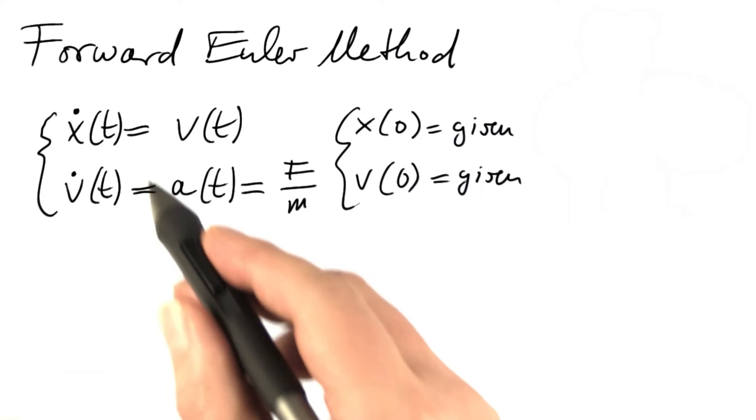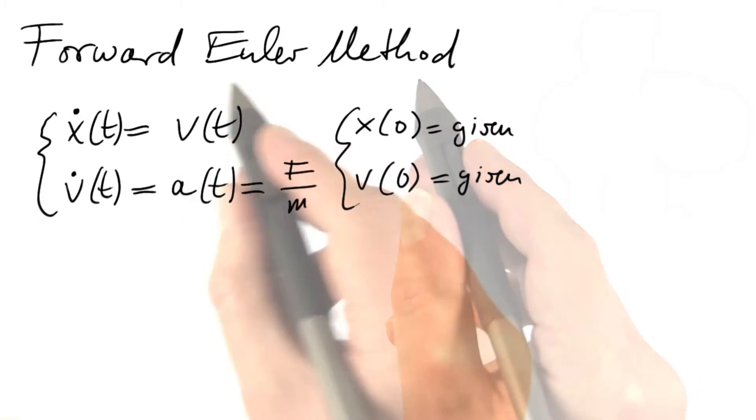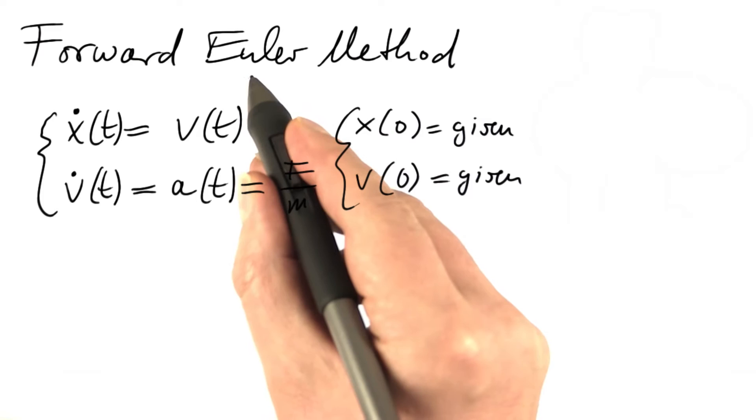And the easiest way for doing so is called the forward Euler method. The most complex thing with that method may be the name of Euler.